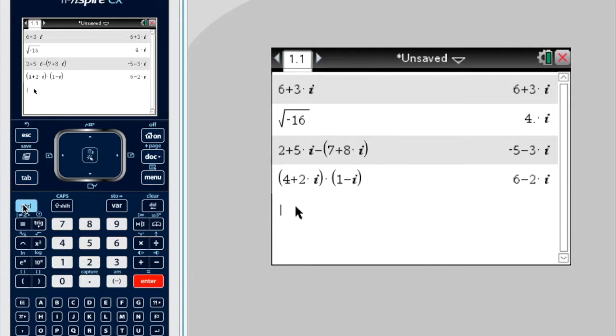And of course division. The easiest way is to press control, divide, and get a nice fraction. 5 plus 4i, press down, over negative 3 minus i. Enter.